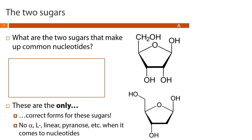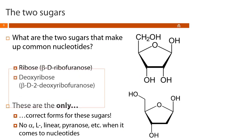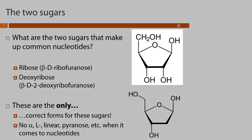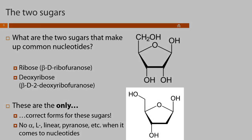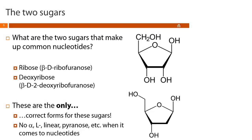Our two sugars are ones we saw in the carbohydrates module: ribose and deoxyribose. More specifically, they exist as beta-D-ribofuranose and beta-D-2-deoxyribofuranose. These are the only correct forms when talking about nucleic acids — they are always in the beta-anomer, the D-enantiomer, and in the furanose cyclic structure.